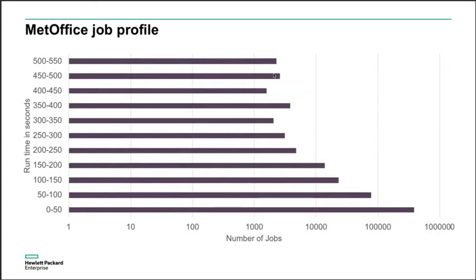These are the profiles of jobs running on Met Office, collected over two or three days. They run a lot of jobs — maybe 70,000 or more per day, possibly 700,000 or more. The runtime plot shows that most jobs run in less than 50 seconds — it's a logarithmic plot showing a very large number of short jobs. But there are also some longer-running jobs, maybe thousands.